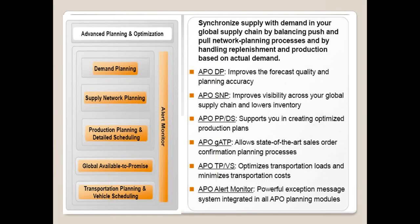Demand planning is basically for generating a statistical forecast — it reads historical data and generates a statistical forecast. Supply Network Planning does the planning: given the forecast values, how much can be produced, what is the machine capacity, how much can be produced, and how to distribute stock to the DCs. Production Planning and Detailed Scheduling does detailed-level planning, like hourly-based planning — for example, how to process raw wheat into a finished product.